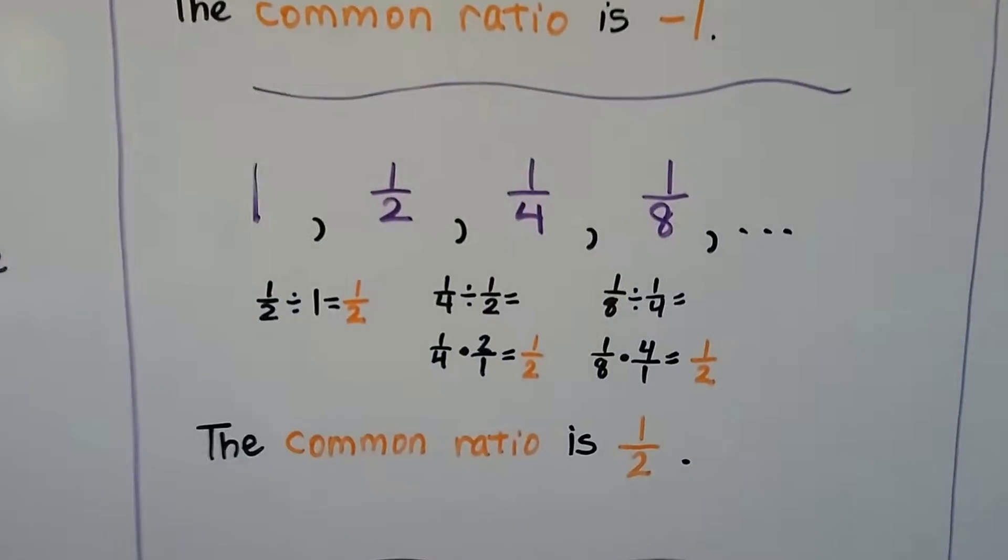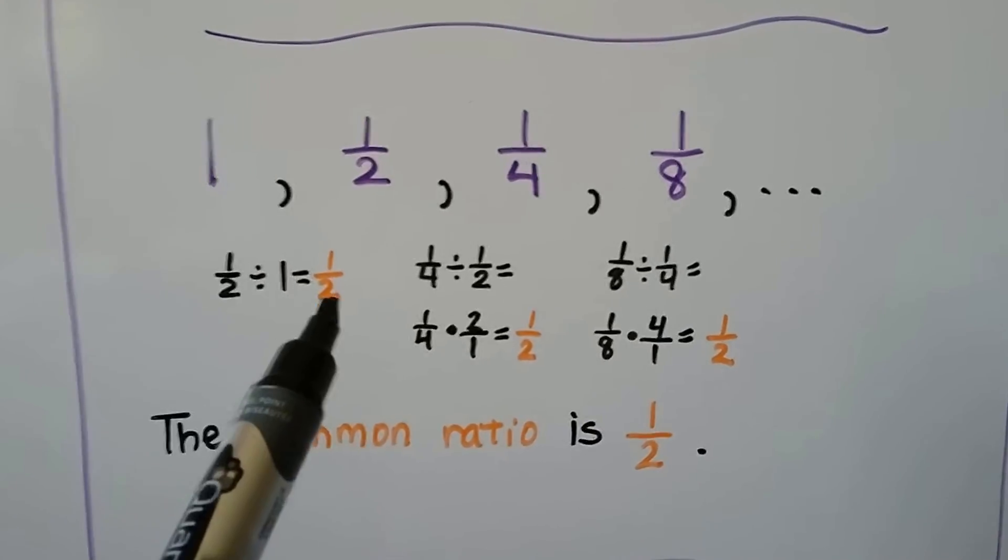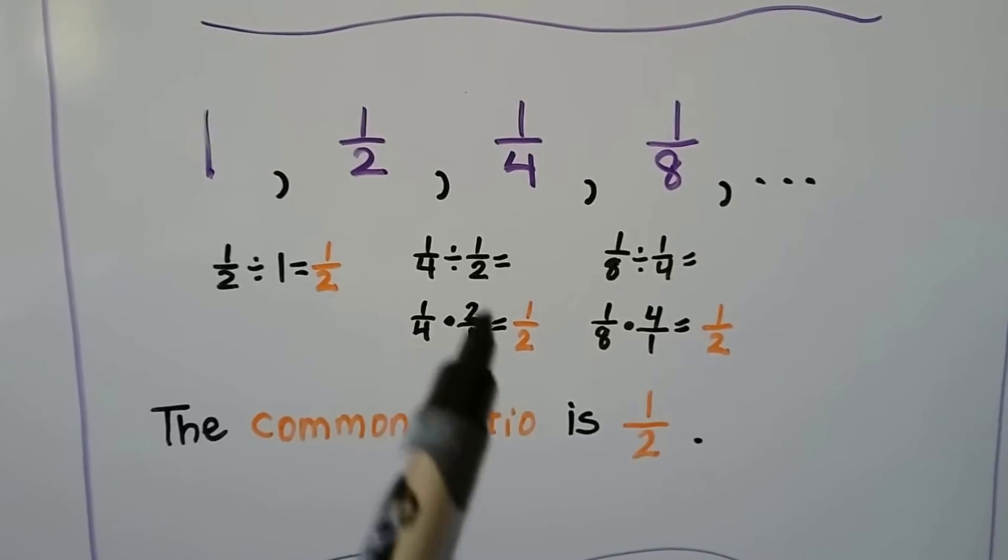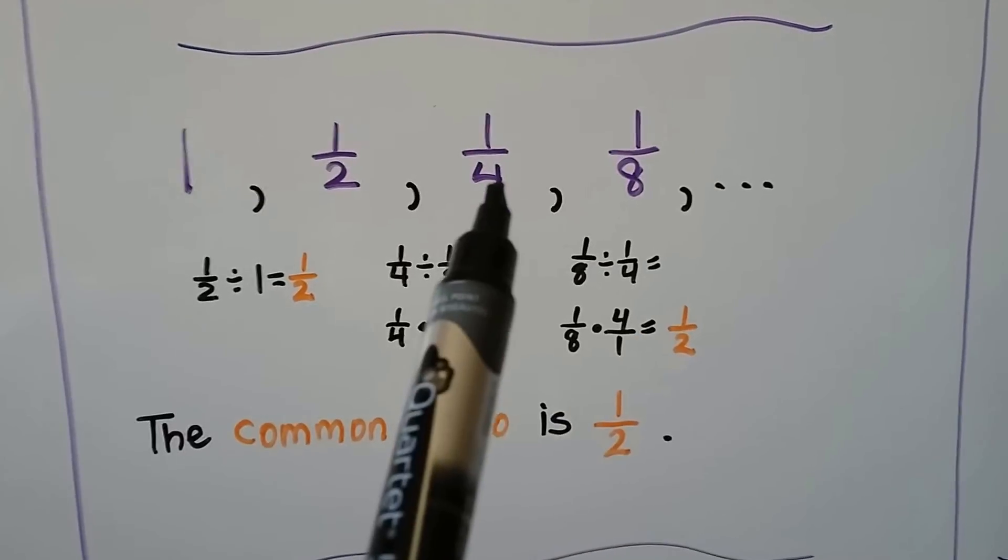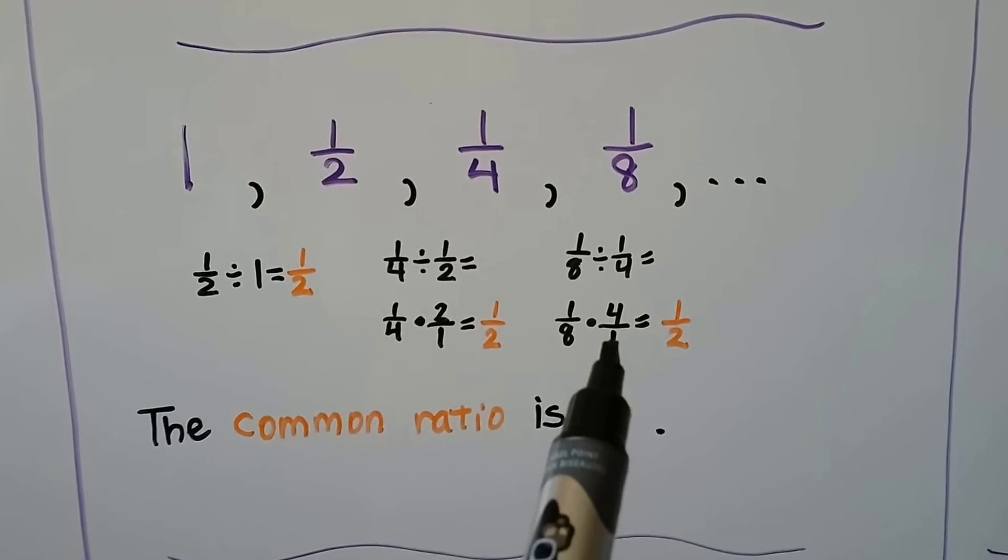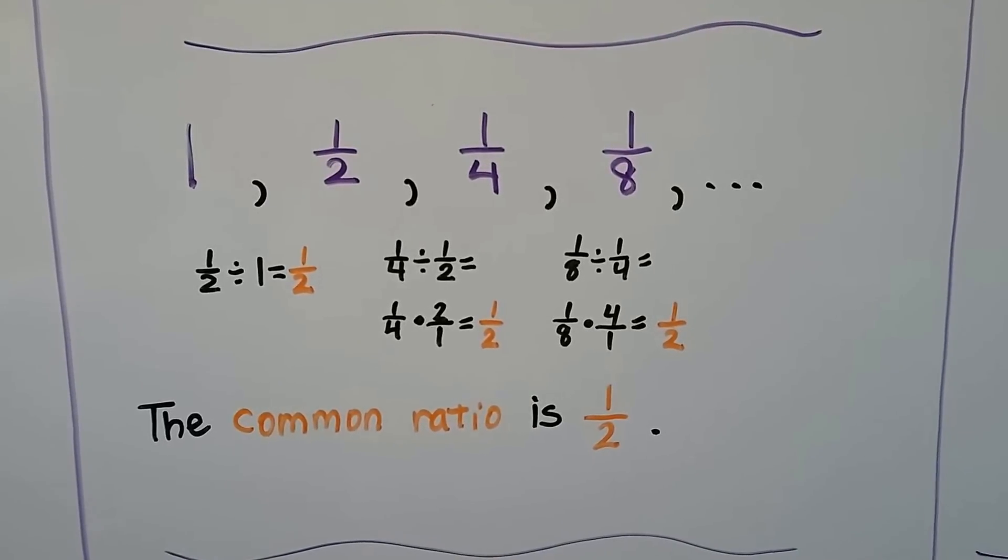Here we've got some fractions. We do a half divided by 1, that gives us a half. We do 1 fourth divided by a half. We just multiply by the reciprocal. So we've got 2 fourths, which is 1 half. We've got 1 eighth divided by 1 fourth. Multiplying by the reciprocal of 1 fourth is 4 over 1. We get 4 eighths, which is a half. So the common ratio is a half.